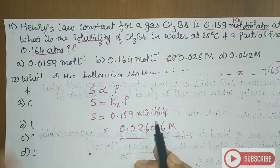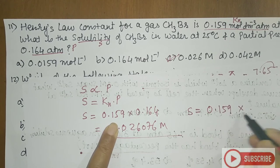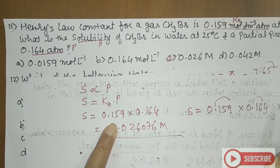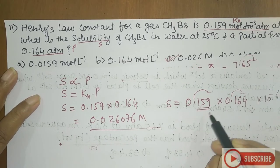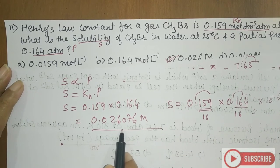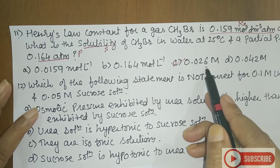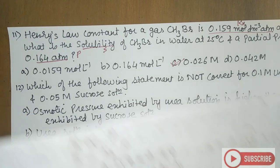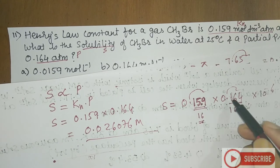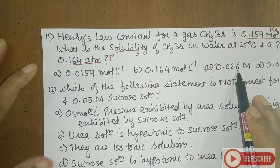Looking at the options, only the third option falls in the 250–260 range, confirming the answer. This shortcut — shifting decimals and approximating — helps quickly identify the correct option. So the answer is the third option.